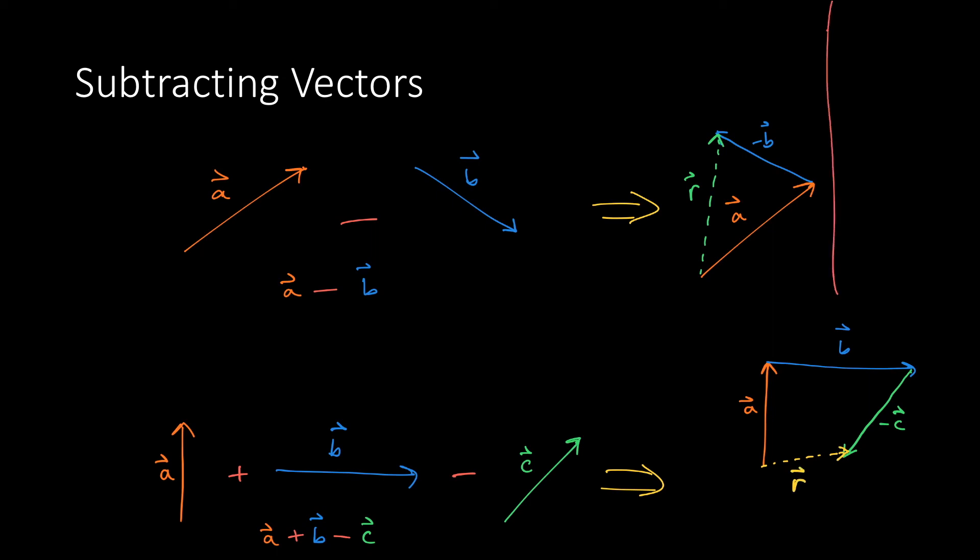Now let us test the commutative property that I mentioned earlier by adding these in a different order. We will start with negative c and then we will add vector b to the tip of that and then we will add vector a. As you can see, the resultant points in the same direction and has the same magnitude.